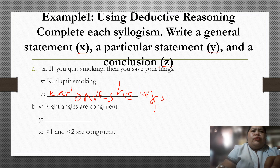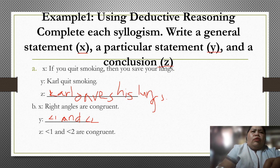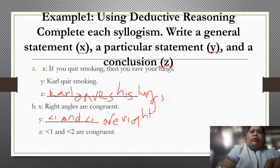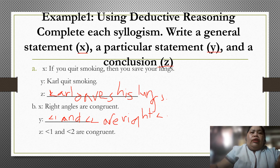Example B: right angles are congruent. So we can say that angle 1 and angle 2 are right angles — that is the particular statement. From this general premise about right angles, the conclusion is: therefore angle 1 and angle 2 are congruent.